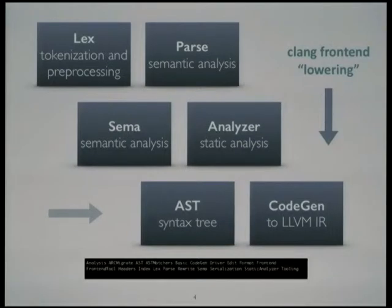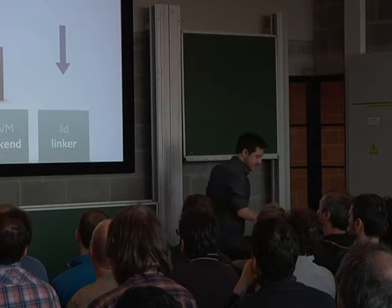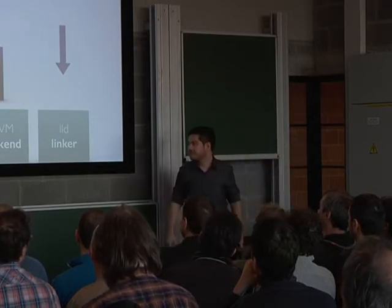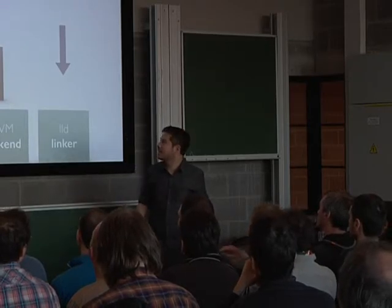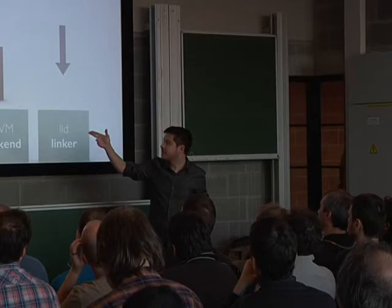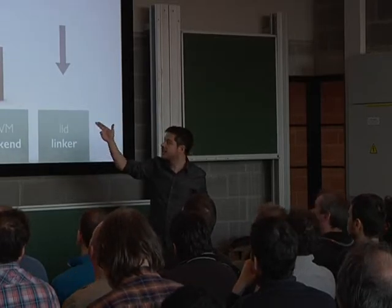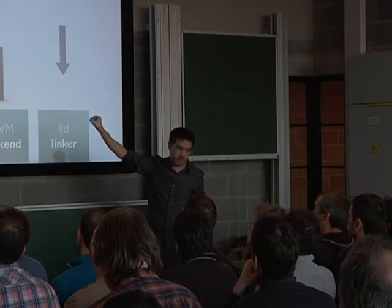We have something called lowering in LLVM. Lowering just means moving stuff from one representation to another, usually a lower-level one. We start at the top: source code goes in — C, C++, Objective-C, Objective-C++, various language standards. It goes into the driver, which is a GCC-compatible component that takes the same flags. It has a familiar user interface, it's a separate process, and it kicks things off. That's the thing you pass your command line arguments into.